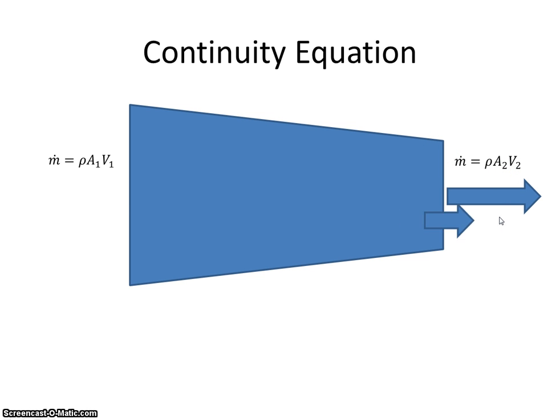And just if we compare the two of them together, you can see for the same mass of air, the velocity out of the back of this nozzle has increased. That's simply what the continuity equation is.